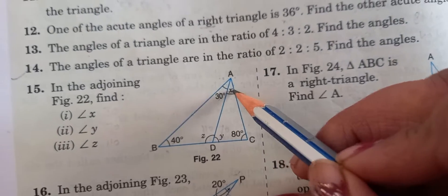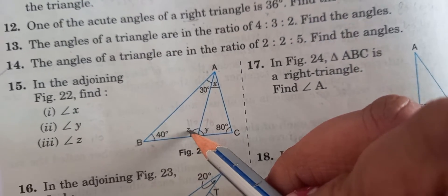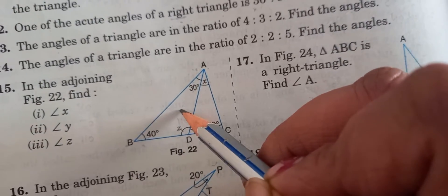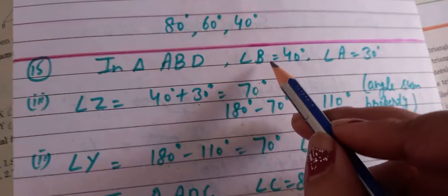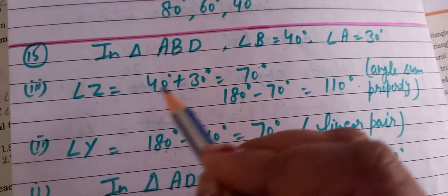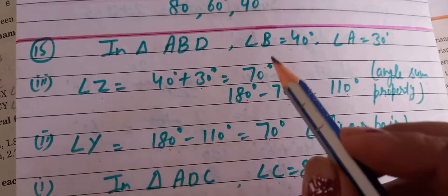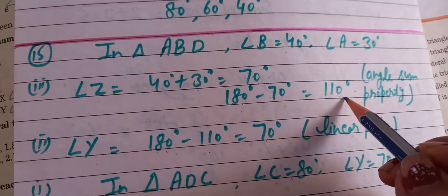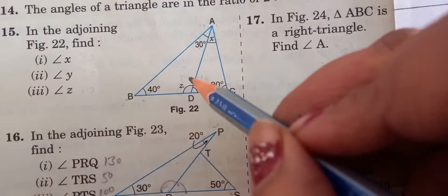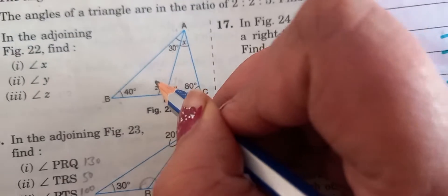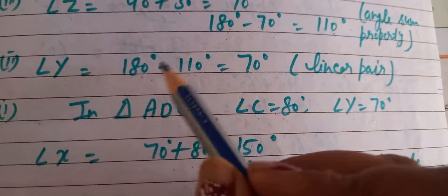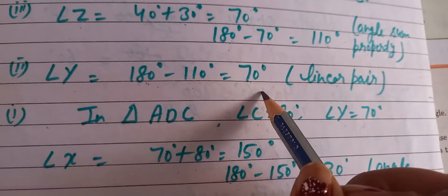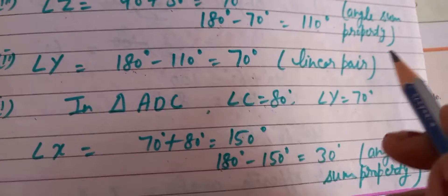Question number 14 is similar to Q13. In question 15, we need to find the values of X, Y, and Z. First, take triangle ABD. Angle B is 40° and angle A is 30°. To find Z: add 40 and 30 to get 70, then subtract from 180, giving angle Z = 110°. Now Y and Z are a linear pair. Since linear pair sums to 180°, angle Y = 180 − 110 = 70°.